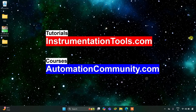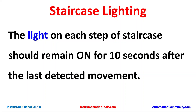Hello everyone, welcome to Automation Community. Today in this video we are going to discuss an example about staircase lighting. The light on each step of the staircase should remain on for 10 seconds after the last detected movement. When a step is taken from one step to another, the light turns on and remains on for 10 seconds. For this example we will use normally open contacts and timers like T-OFF.